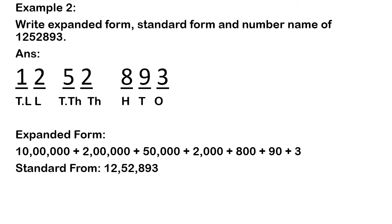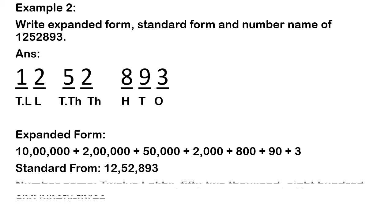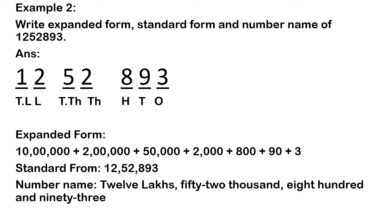Then for the standard form, we divide into 3 groups — lakhs group, thousands group, and hundreds-tens-ones group — and put commas in between. Then the number name: we write it in words. The number name is twelve lakhs fifty-two thousand eight hundred and ninety-three.